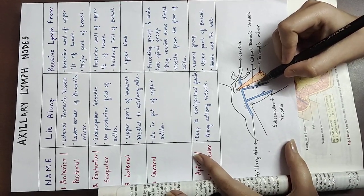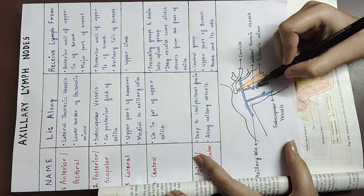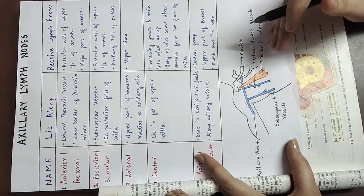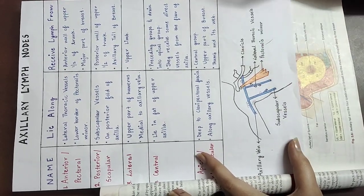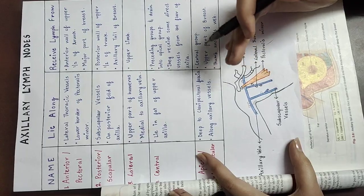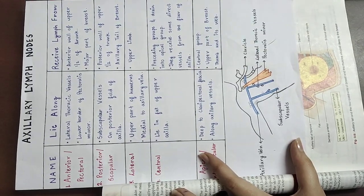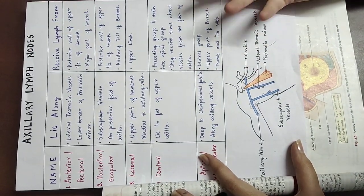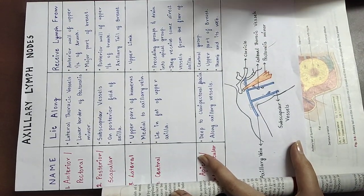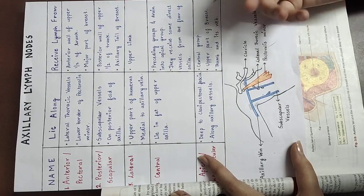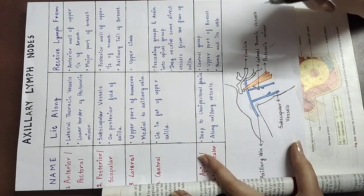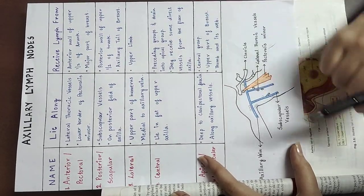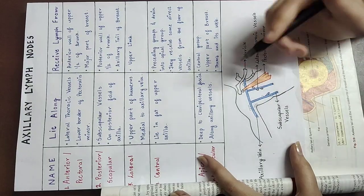They receive lymph from the anterior wall of the upper half of the trunk, because they are present on the anterior wall. They also receive lymph from the major portion of the breast.